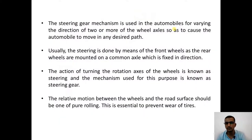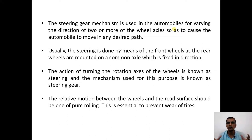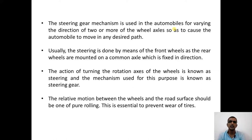Steering gear mechanisms are used in a variety of automobiles for varying the direction of two or more wheel axles so as to cause the automobile to move in any desired path — moving straight, taking a left turn, or a right turn. Usually this is done by means of the front wheels, as the rear wheels are mounted on a common axle which is in a fixed direction, so steering is done only with the help of the two front wheels, which are mounted on something called stub axles. The action of turning the rotation axis of the wheels is known as steering.